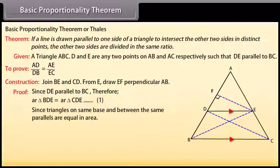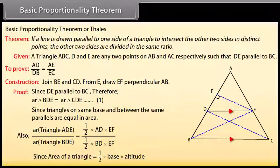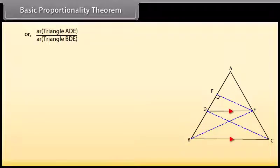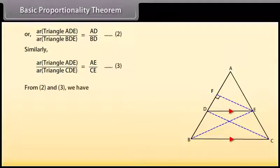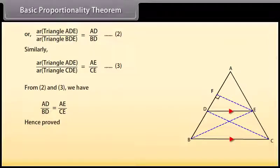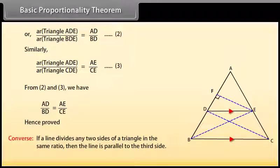Proof: Since DE is parallel to BC, area of triangle BDE equals area of triangle CDE, since triangles on the same base and between the same parallels are equal in area. Area of triangle ADE upon area of triangle BDE equals AD upon BD — mark it as two. Similarly, area of triangle ADE upon area of triangle CDE equals AE upon EC — mark it as three. From two and three, AD upon BD equals AE upon EC. Hence proved. The converse is also true: if a line divides any two sides of a triangle in the same ratio, then the line is parallel to the third side.